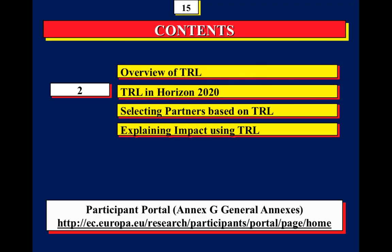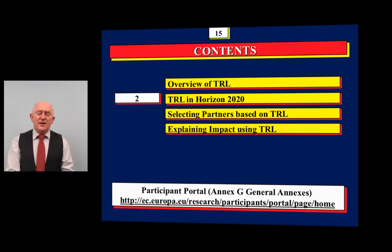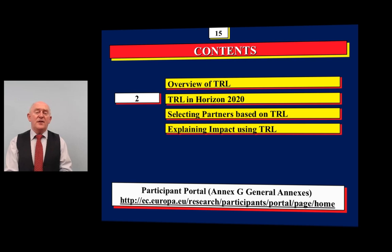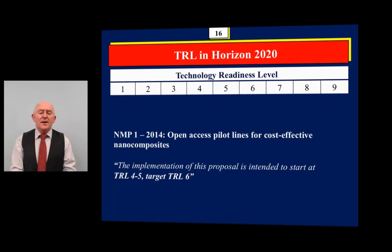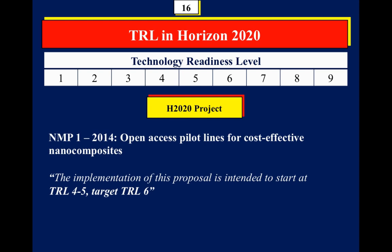In Horizon 2020, TRL has been adopted as a way of expressing where a funding scheme is focusing. Annex G of the general annex on the participant portal contains the official TRL definitions. For example, topic NMP-P1-2014 states that implementation is intended to start at TRL four and target TRL six — so the funding focuses on projects operating in that range. It's not funding basic science or close-to-market work, but rather technologies developed in the laboratory moving toward demonstration and prototyping.